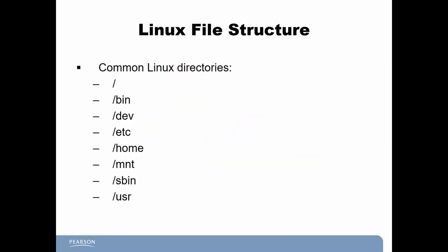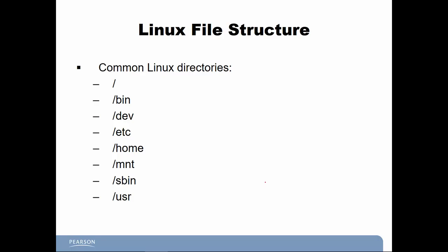Common Linux directories include root, bin, dev, etc, home, mount, sbin, and usr. Bin holds user binaries, sbin holds system binaries, and etc typically holds configuration files. Dev contains device files, proc contains process information, var holds variable files, and tmp is for temporary files. Usr contains user programs, /home is the home directory, lib is the system library, and mnt is the mount directory.